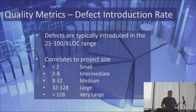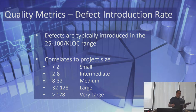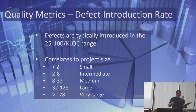Defects are usually introduced in raw code in the 25 to 100 KLOC range. Defect introduction rate directly correlates to project size, and based on the initial defects per KLOC, a project can be categorized as small, intermediate, medium, large, or very large.